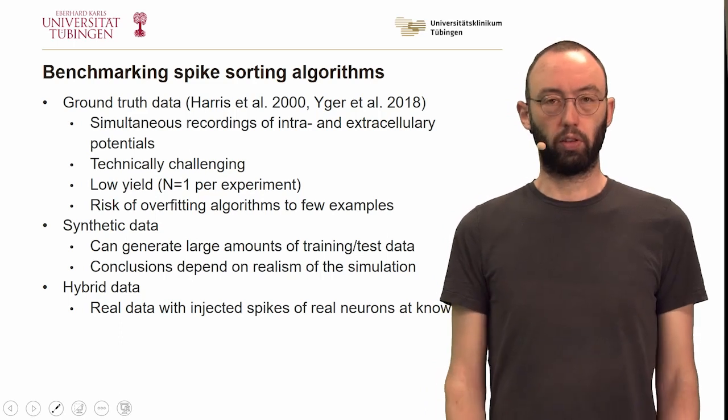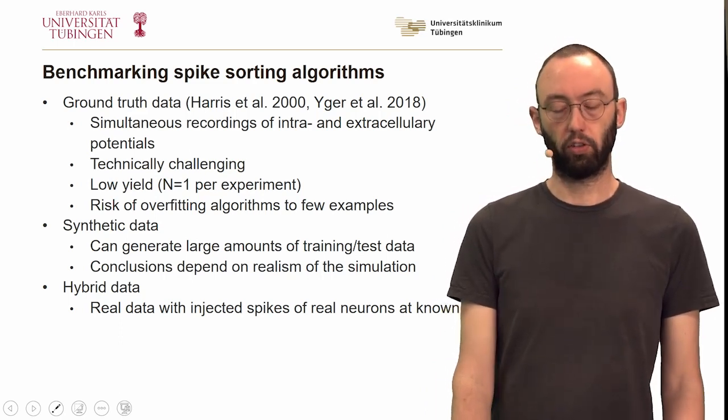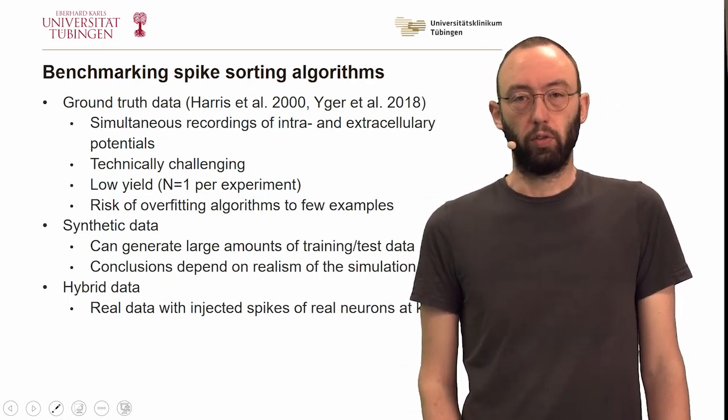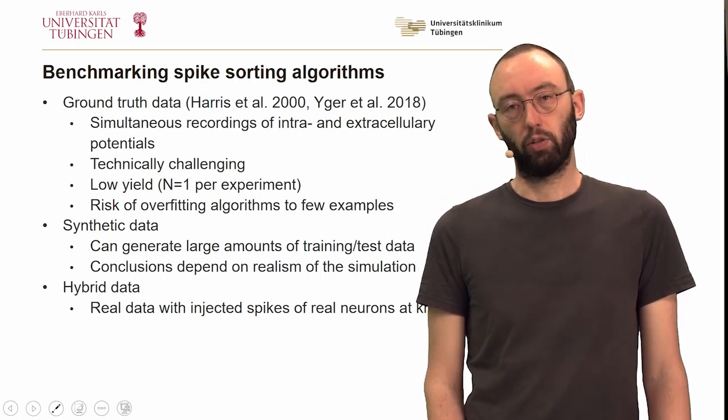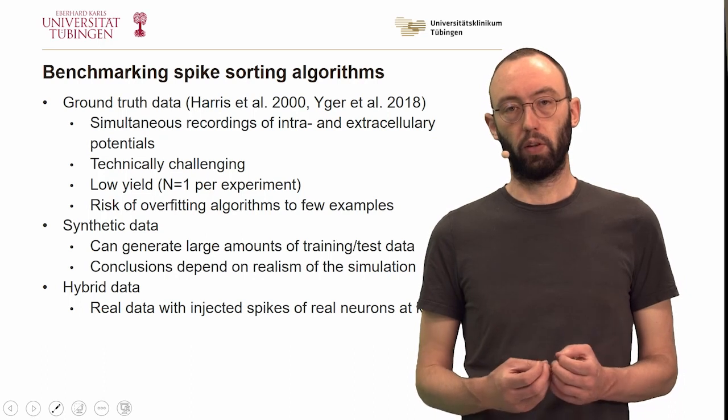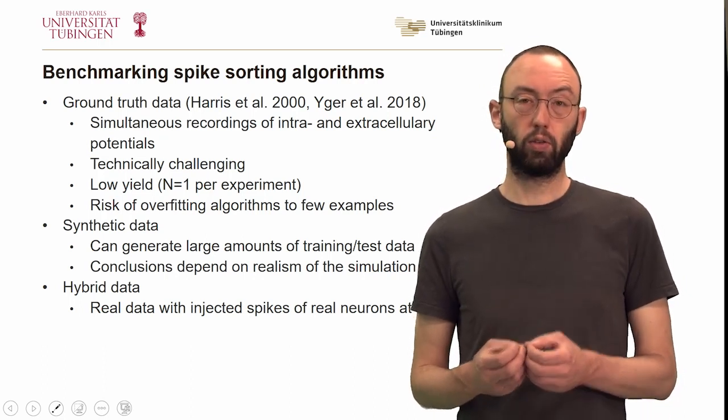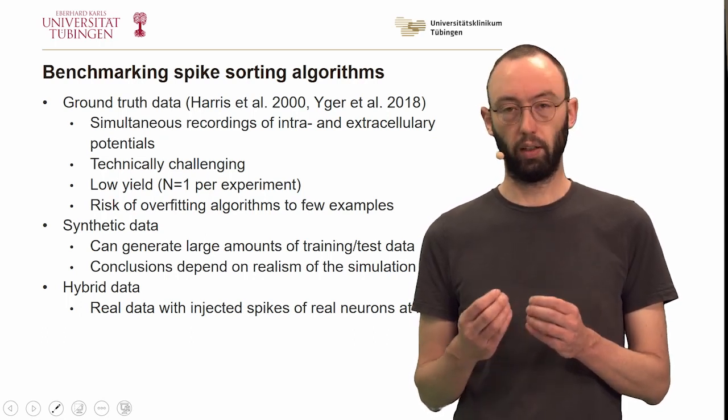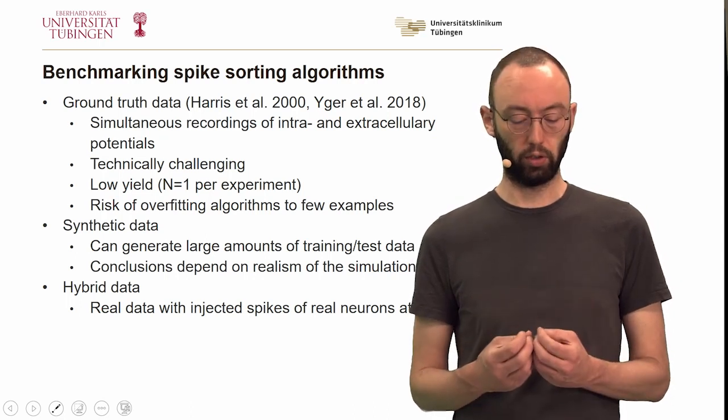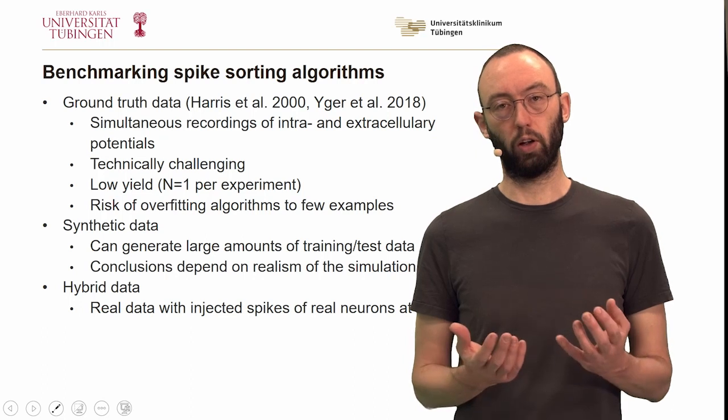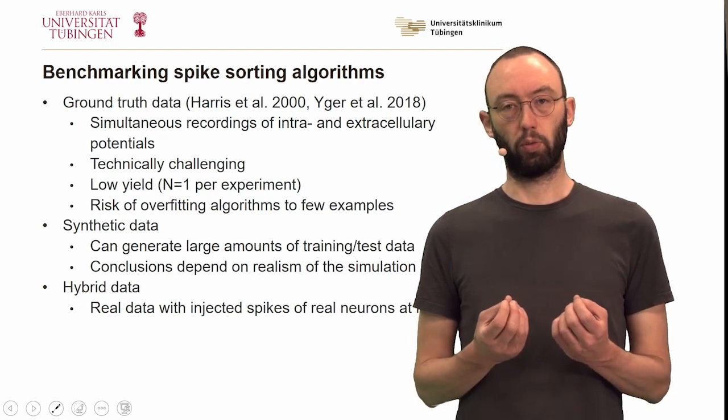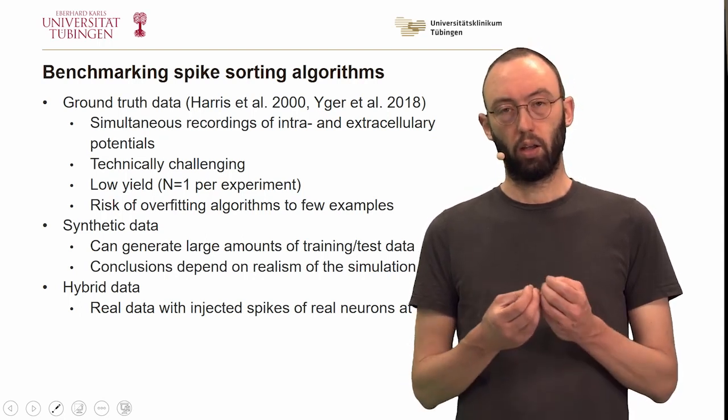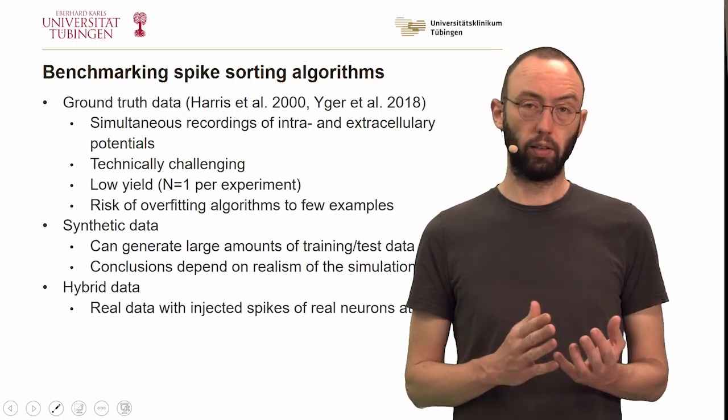How can we benchmark such spike sorting algorithms? This is actually a challenging field because ground truth data is actually very hard to come by. There are a few cases in the literature where people have gone through the laborious experiments and actually collected ground truth data. What you need is simultaneous recordings of intra- and extracellularly recorded neurons. Technically, this is very challenging and has very low yield. Also, because there is so few data around, excessively relying on these ground truth experiments can overfit algorithms to few data examples.